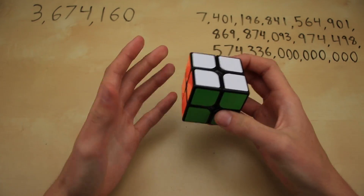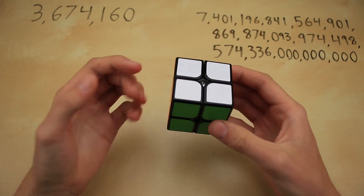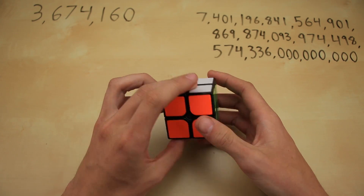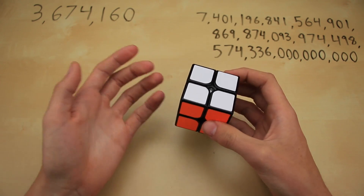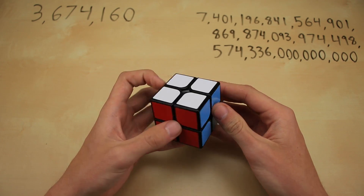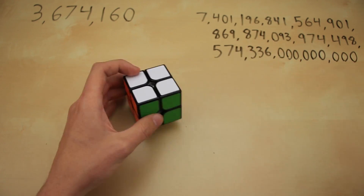Starting off with the 2x2, the calculation for this cube is actually very similar to that of a 3x3, except that there are fewer pieces, so that should make it quite a bit simpler. But there is one big distinction.